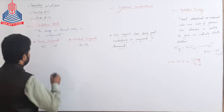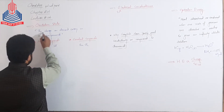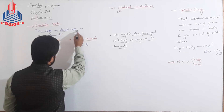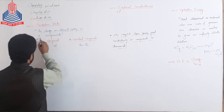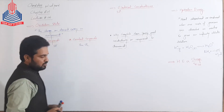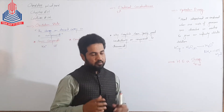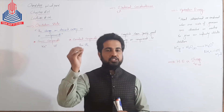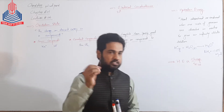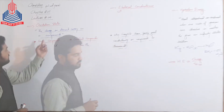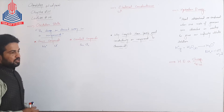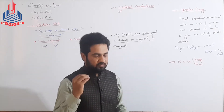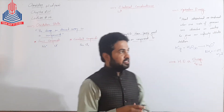Oxidation State is the charge on an element carried in a compound. A compound میں موجود elements کے اوپر جو apparent charge ہوتا ہے, that charge is known as Oxidation State. A compound میں موجود elements پے جو بھی charge موجود ہوگا, وہ اس کی Oxidation State کہلائے گی.